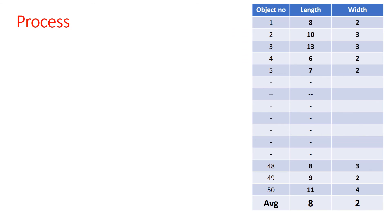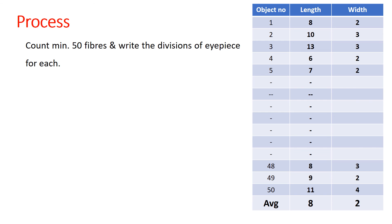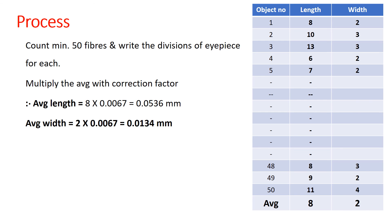While recording, make sure you count a minimum of 50 fibers and draw a table with fiber number, length, and width. Then take the average of the length and the average of the width, and multiply each average by the correction factor. In our case the correction factor is 0.0067. Average length of 8 divisions multiplied by 0.0067 gives 0.0536 mm. Average width of 2 divisions multiplied by 0.0067 gives 0.0134 mm. This is how you determine the length and width of the fibers.